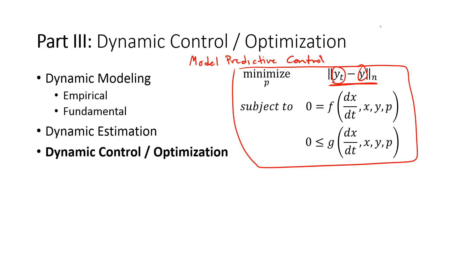For example, let's say my current state is here and I want it to follow that trajectory. My model prediction, if I do nothing, may do what the dashed line shows. So I'm going to take control actions to drive it, to minimize the deviation between the trajectory and the model predictions.